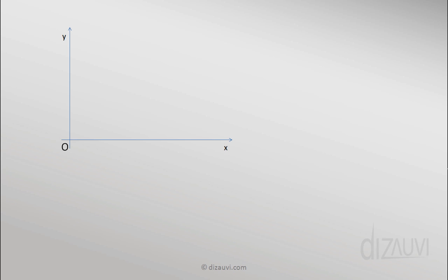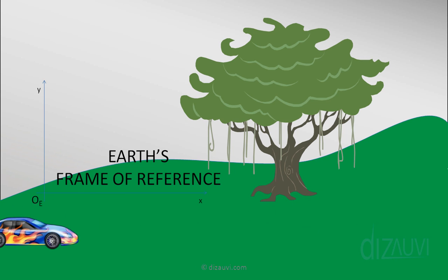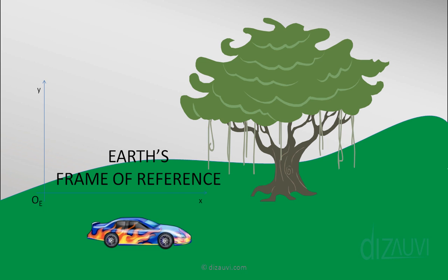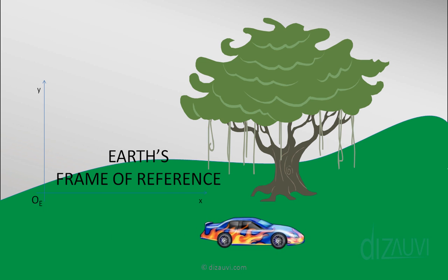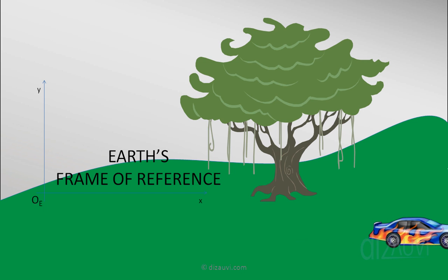For most of the motion we study — for example, motion of cars, toys, people walking — we measure everything relative to the Earth. So the Earth's frame of reference will be an important reference frame throughout our study of physics, especially in mechanics. We will usually use the subscript e to denote the Earth's reference frame, and we will usually choose to fix the reference frame on the surface of the Earth.